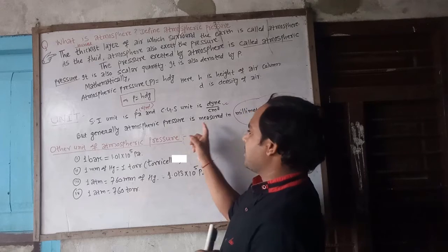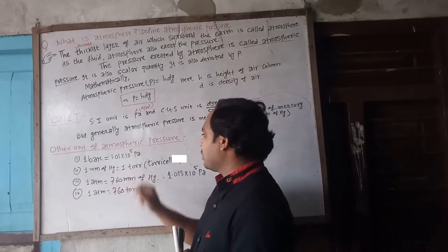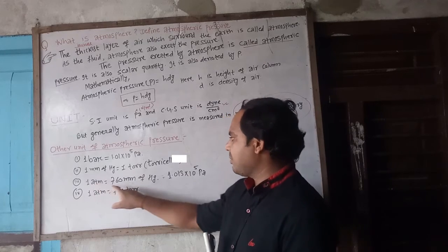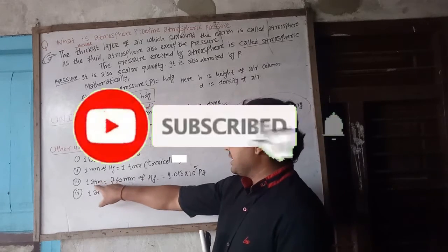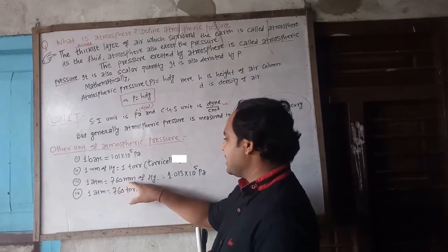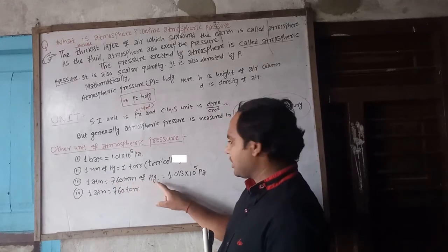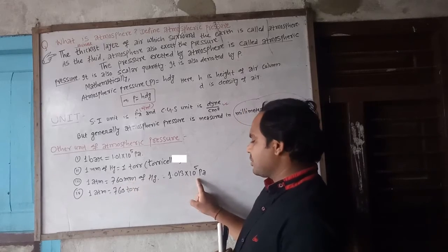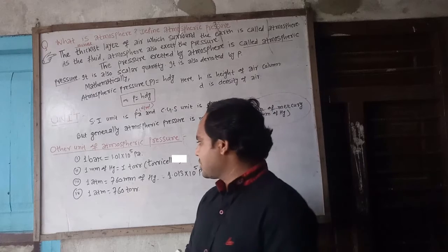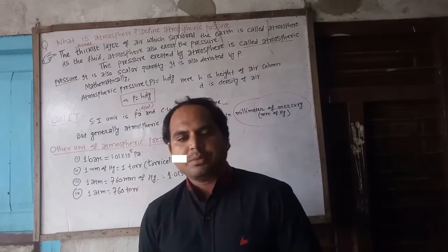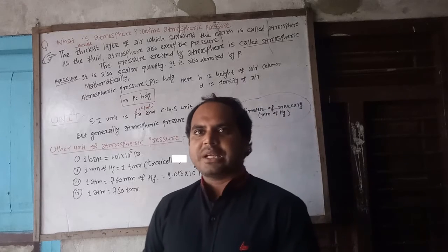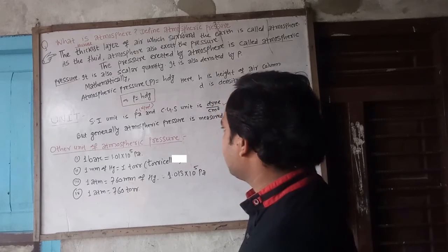One atmosphere equals 760 millimeters of mercury. Atmospheric pressure is 760 mmHg. This is the pressure unit commonly used in general practice.